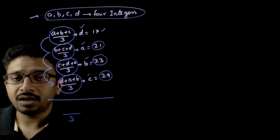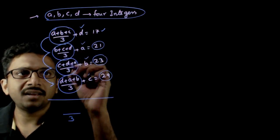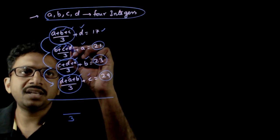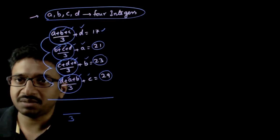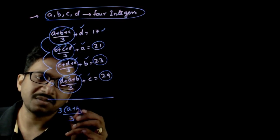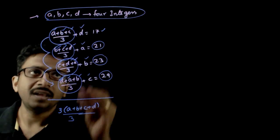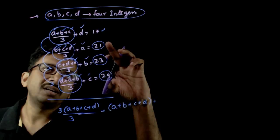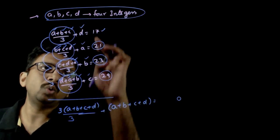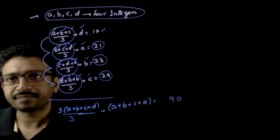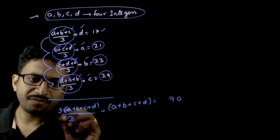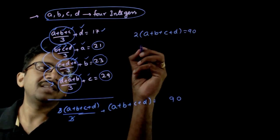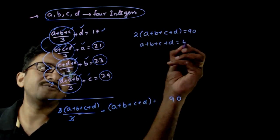When you add these four numerators, you can see that a appears three times, b appears three times, c appears three times, and d appears three times. So the addition of all this is three times (a + b + c + d). You also have another (a + b + c + d), giving 4(a+b+c+d)/3 = 90, since 17+21+23+29 = 90. With 3 and 3 cancelling, 2 times (a + b + c + d) is equal to 90, which means a + b + c + d = 45.